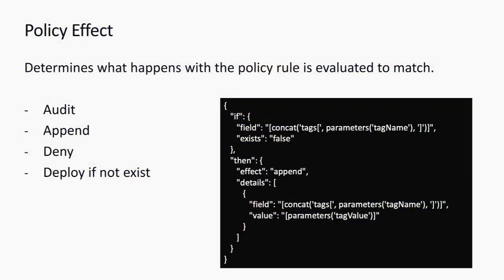When we look at the policy definition, we have the concept of effect — what the policy is going to do once it's evaluated. I've got four effects here. The first is Audit, and this is kind of where you want to start. Policies can introduce some very tough love, like blocking creation or breaking things that used to work. With the Audit effect, we define our policies — like 'network security group must not allow this port' or 'all resources must have a tag' — and apply them to audit what's going on without stopping anything.